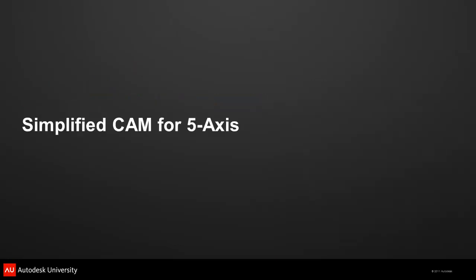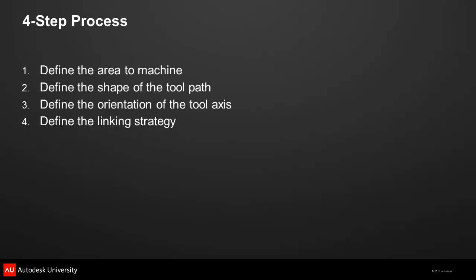Now it's time to see the composite function in action. The composite function follows four simple steps based on the standard workflow for any type of machining — whether it's two-axis or five-axis, lathe or mill. It just makes sense to align the technology with the same logic that machinists already use.